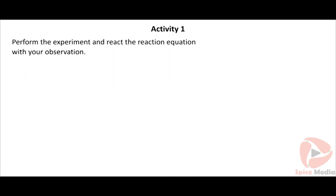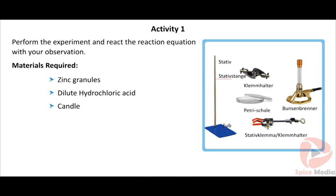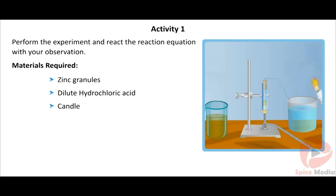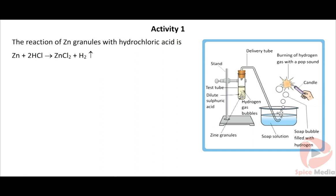Activity 1 (Acids): Perform the experiment and write the reaction equation from your observation. Materials required: zinc granules, dilute hydrochloric acid, and a candle. Take 5g of zinc granules in a test tube and add 10ml of hydrochloric acid through a thistle funnel. Bubbles are seen due to hydrogen gas. Bring the burning candle near the bubbles — the flame goes off with a popping sound. This confirms that the metal displaces hydrogen from dilute hydrochloric acid. The reaction is: Zn + 2HCl → ZnCl₂ + H₂.